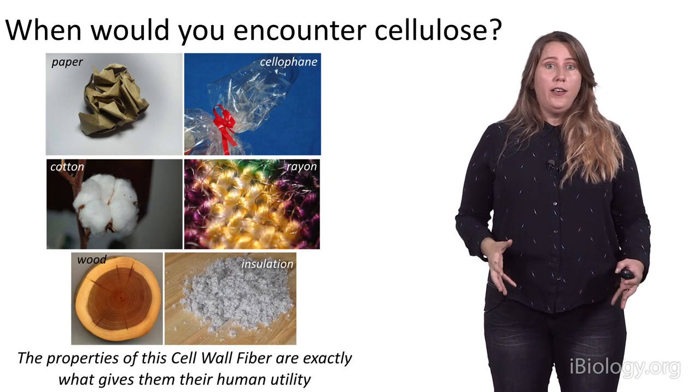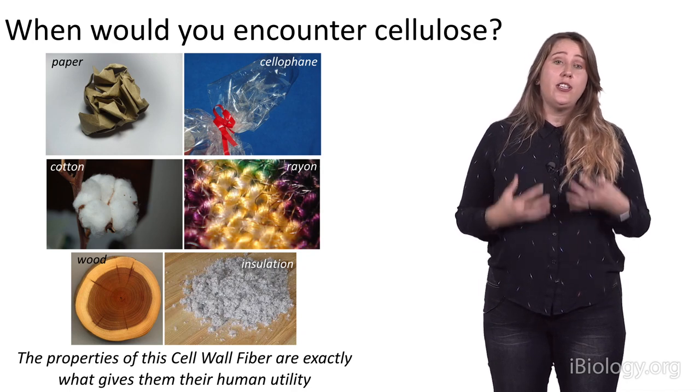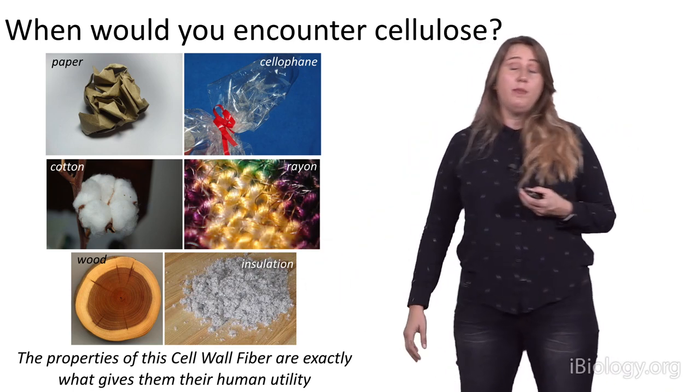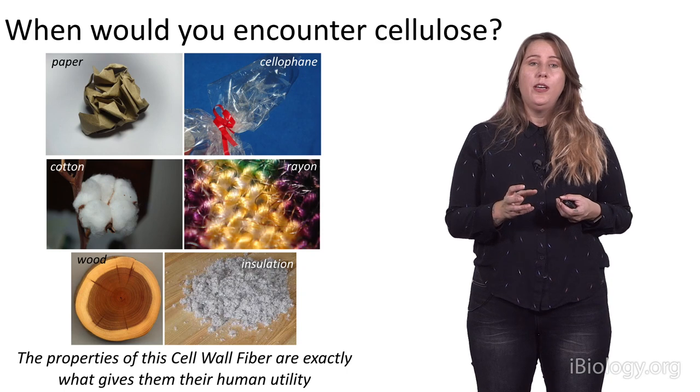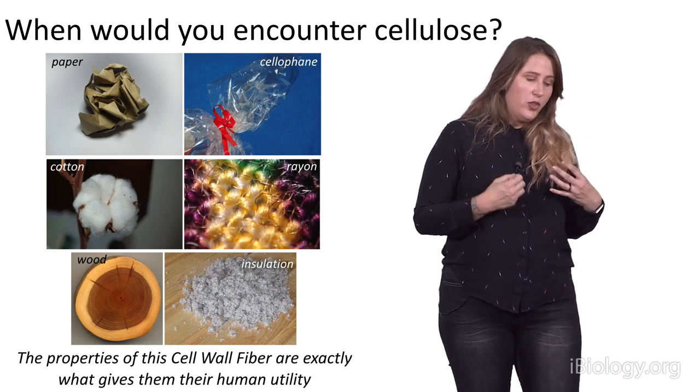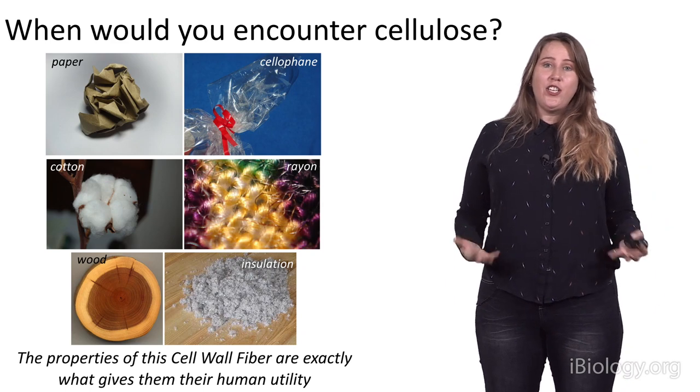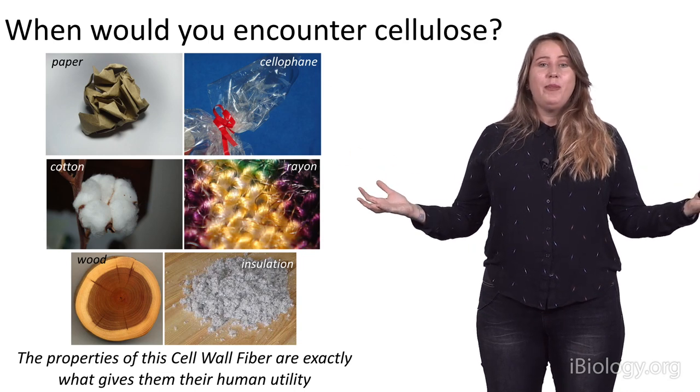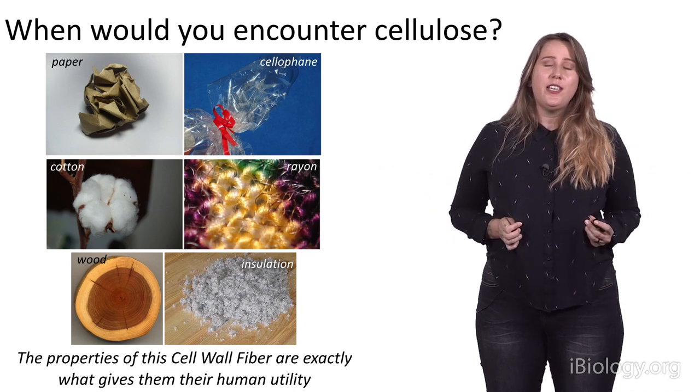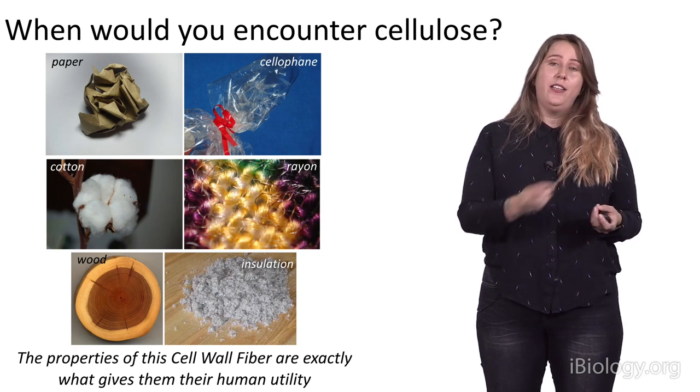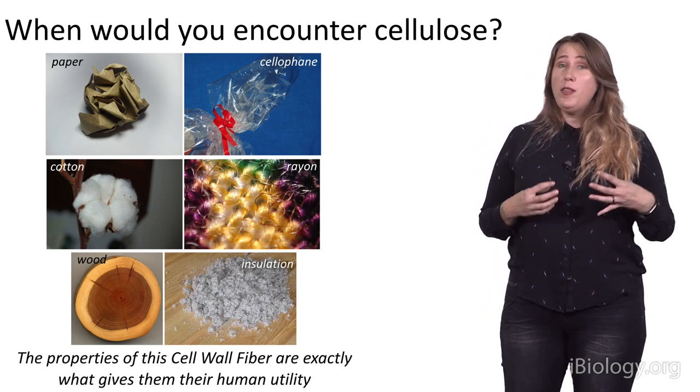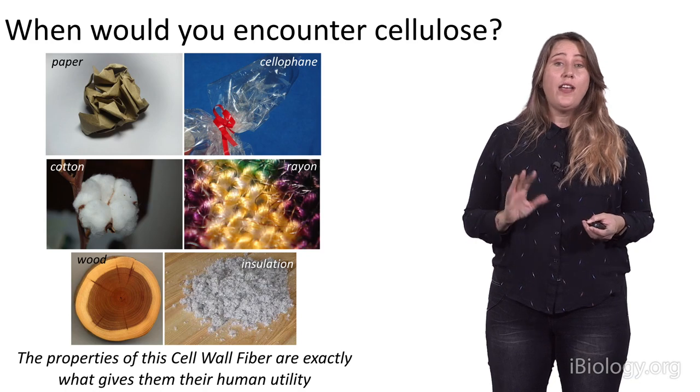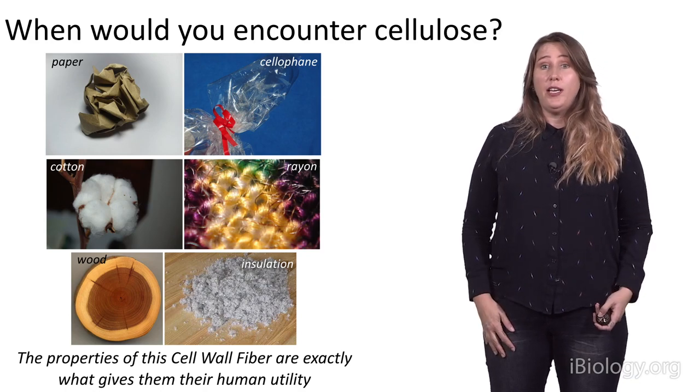The last place that you will encounter cellulose on an absolute daily basis will be in materials that we use for building. Wood. It's no surprise that the majority of wood is actually cellulose. Think about how strong it is and how strong those fibers are. But, in addition, you can use cellulose as insulation in buildings. And so, it's entirely possible that, as you're listening to this talk right now, you're learning about cell walls, that you might actually be sitting on a chair made out of wood. Cellulose. In a house that has wood. Cellulose. Potentially wearing clothes made out of cellulose fibers and even taking notes on paper that's made from cellulose. So, cellulose is actually one of the most ubiquitous sugar molecules that we will encounter in our daily lives. But it's not the only one that's important for plant cell wall structure and function.